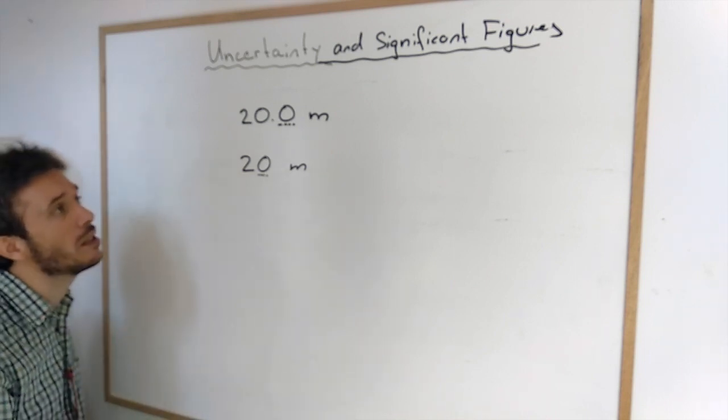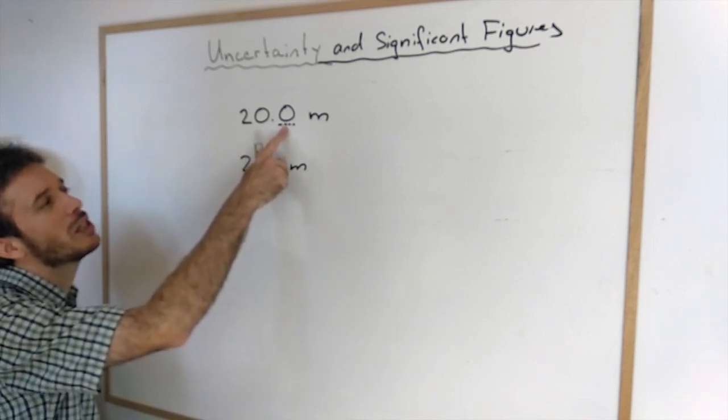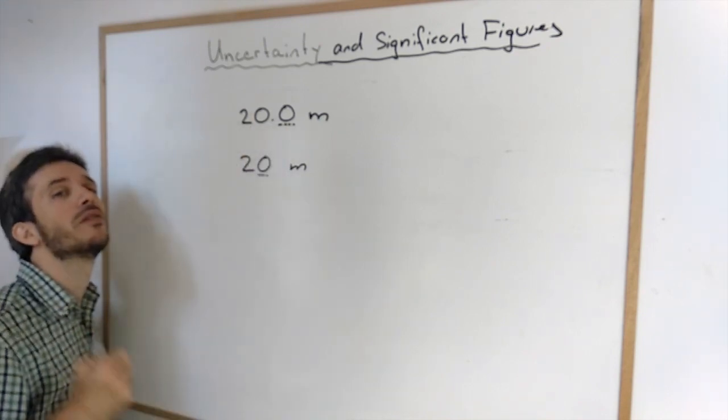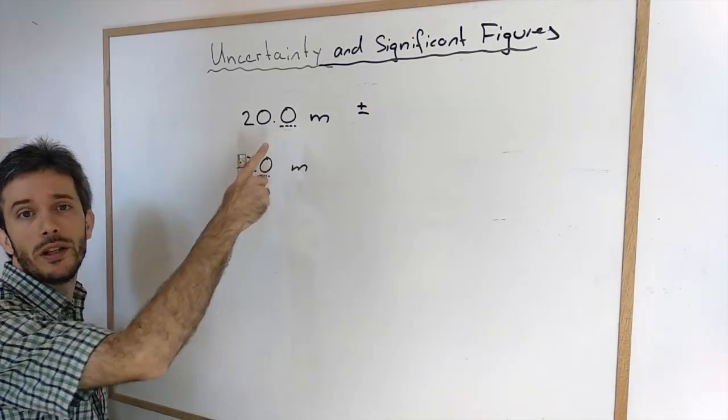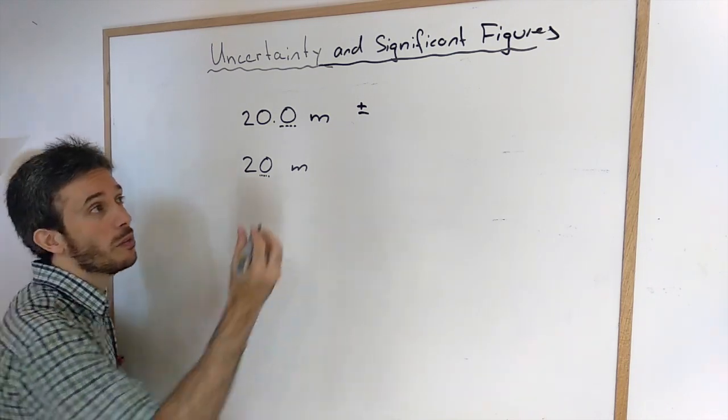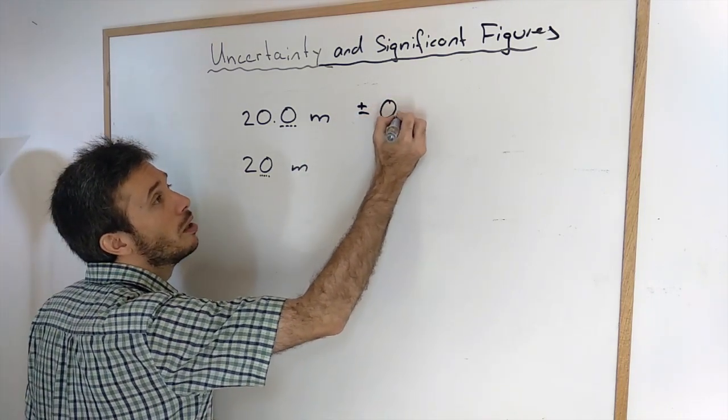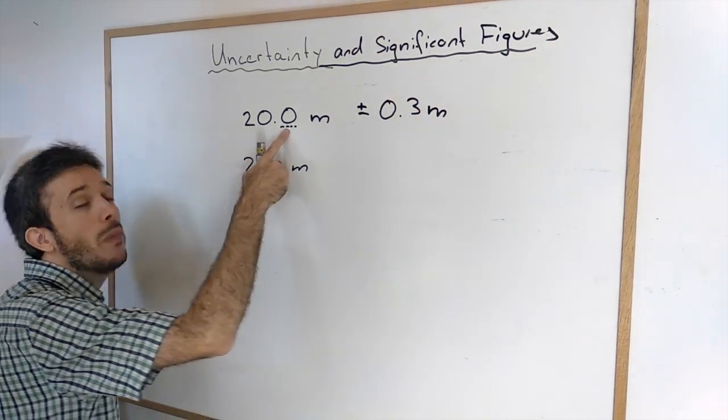Now, with uncertainties, we're not really doing anything different. All we do is we actually specify plus minus how much is it. In this case, 0.1 meters. Is it plus minus 0.2 meters? Is it plus minus 0.3 meters? So I'm just a bit more quantifying how much I'm uncertain.